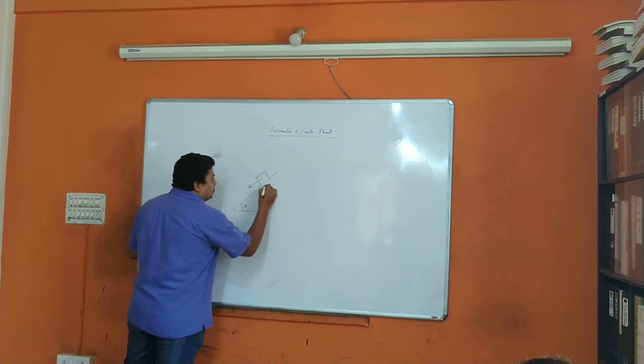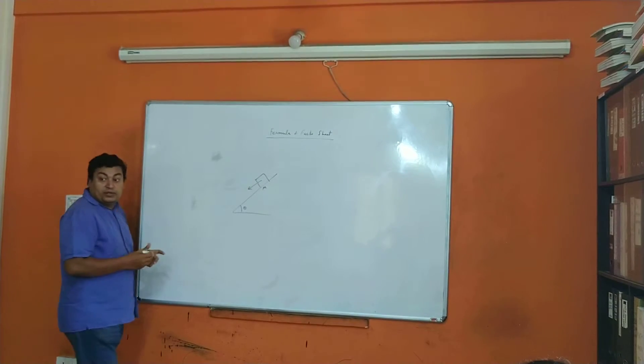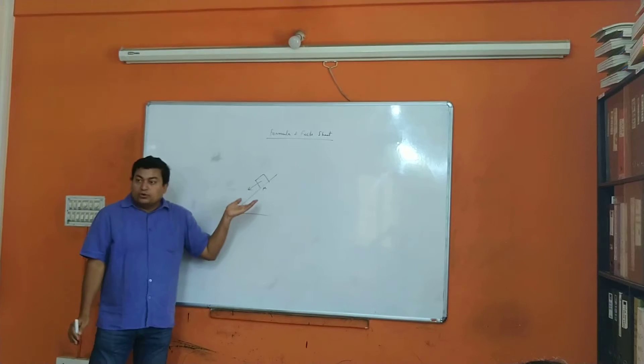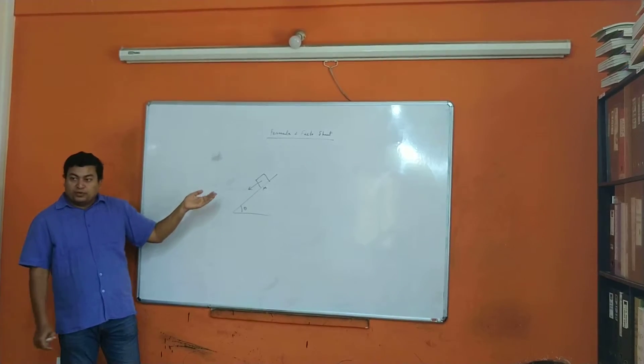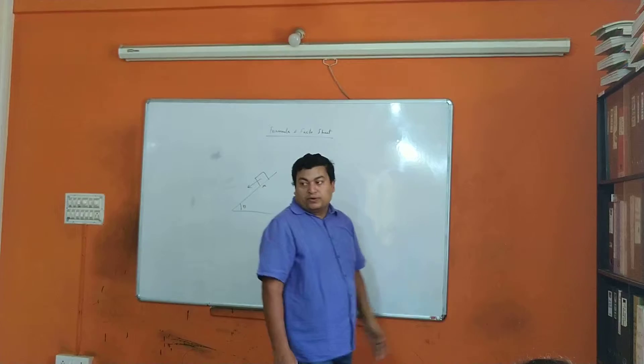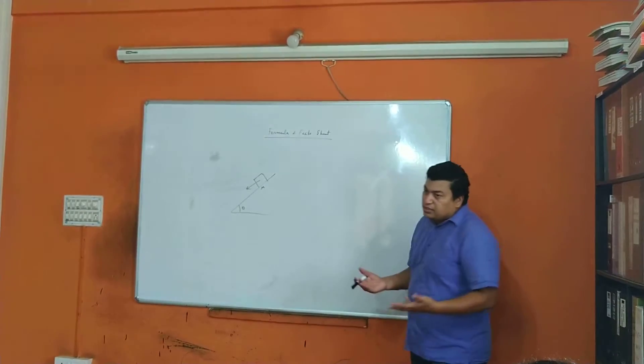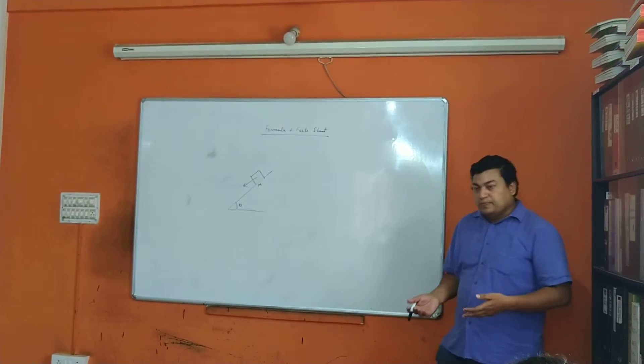After that, suppose the friction coefficient is μ. So μ mg cos theta will be the friction force there. That also you can remember as a fact. In circular motion, the centrifugal force will be mv²/r.